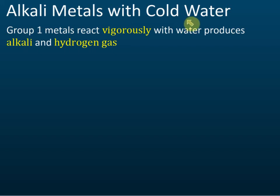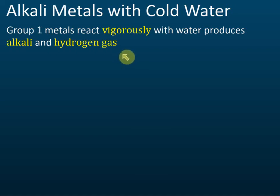All group one metals react vigorously with water, producing alkali and hydrogen gas. They react very fast, and at the same time gases are produced. That gas is hydrogen gas — if you test the gas, you will find that it is hydrogen gas.